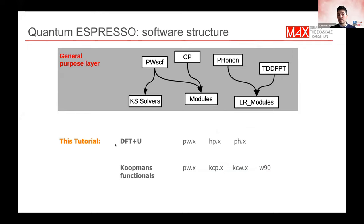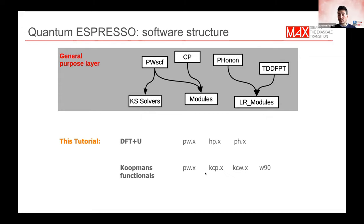For this tutorial, we are focusing on the DFT+U method implemented in Quantum Espresso, and also the capabilities to compute Koopmans functionals. For DFT+U, we will make use of PW.x (PWSCF), and also HP, the linear response code that allows computing U from linear response theory. We'll also see applications of DFT+U to the calculation of phonons by means of PH.x. For Koopmans, there is KCP, a modified version of the Car-Parrinello code, and also KCW, which exploits Wannier functions with an interface to Wannier90.